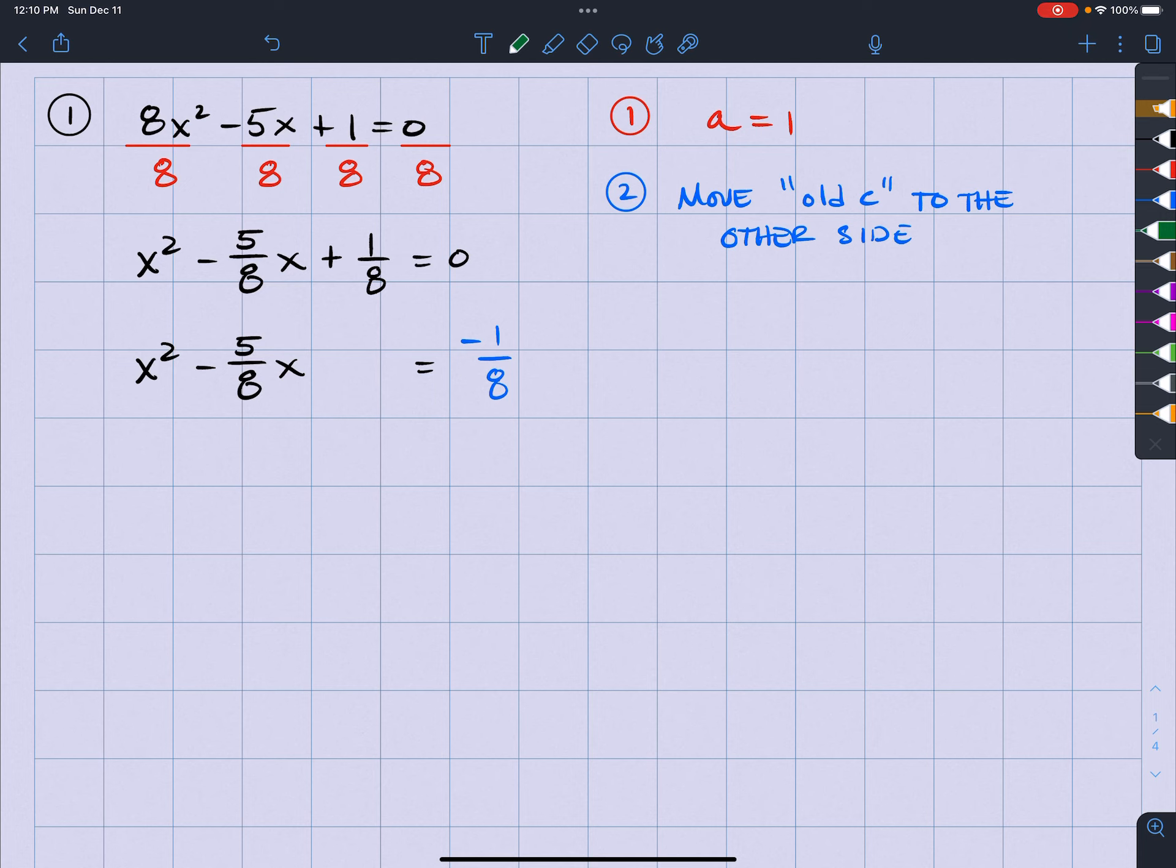The third step is that I want to find a new C, and I'm going to add that C to both sides. Now, I know that C is equal to B divided by 2 squared. So my B here is going to be that negative 5 eighths.